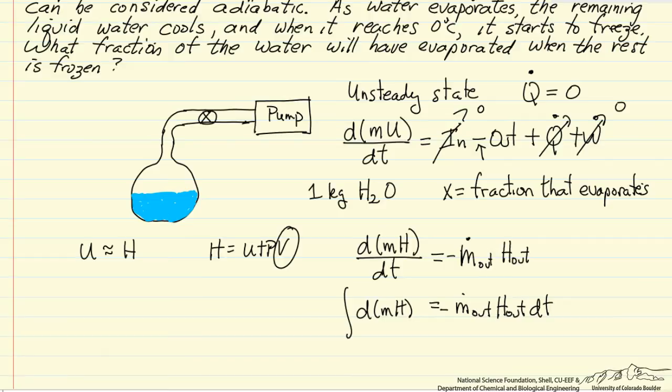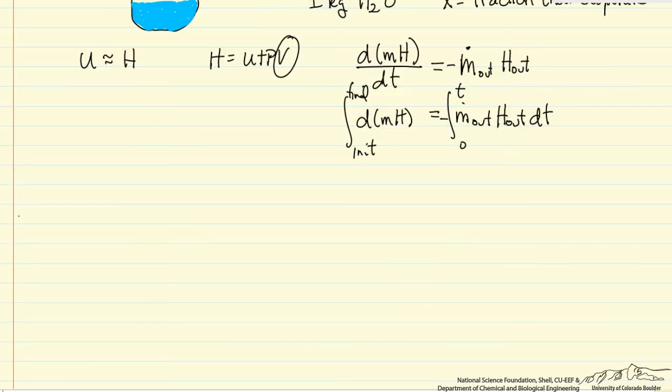Once I do that rearrangement, I can integrate from zero to time t, and from my initial condition to my final condition. The integral of this derivative is just mh evaluated at two limits. So the final mass times the enthalpy of the final, which is ice, minus the initial mass, which is in our case one kilogram, times the enthalpy initial, which is liquid water at 40 degrees C.